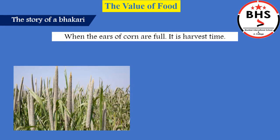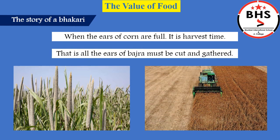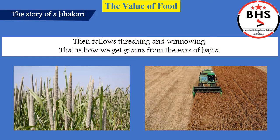When the ears of corn are full, it is harvest time. When the crops are completely grown, it is time to gather the crops — that is, all the ears of bajra must be cut and gathered. Then follows threshing and winnowing. That is how we get grains from the ears of bajra.